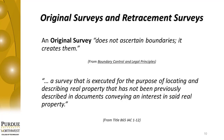Per the Boundary Control text, the original survey does not ascertain boundaries — it creates them. Rule 12 states that an original survey is a survey executed for the purpose of locating and describing real property that has not been previously described in documents conveying an interest in said real property. So whenever you're creating a new boundary not yet described in the records and conveyed, you're completing an original survey.